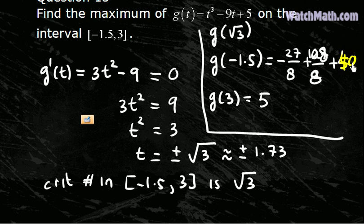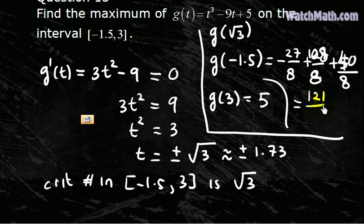So 40 over 8, then this is equal to 148 minus 27, 121, 121 over 8.